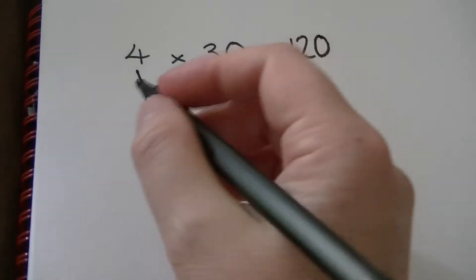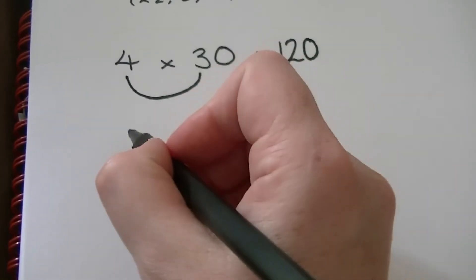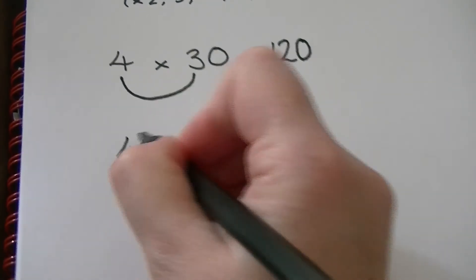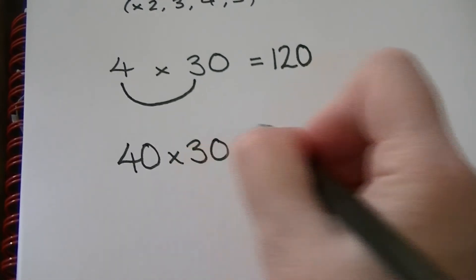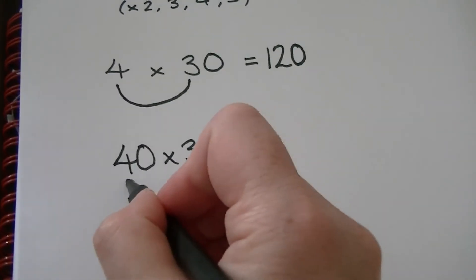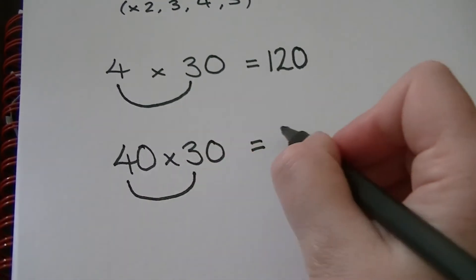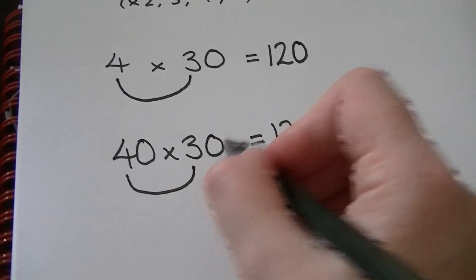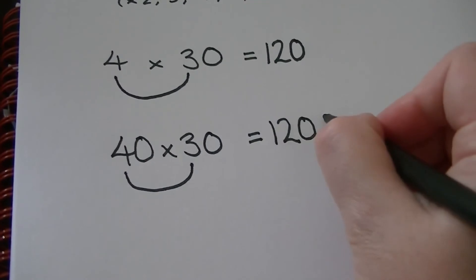If we move on to something slightly more difficult, although it's not, let's do 40 times 30 instead. Again do the tables bit. 4 times 3 is 12. This time we've got two zeros so we add two zeros on.